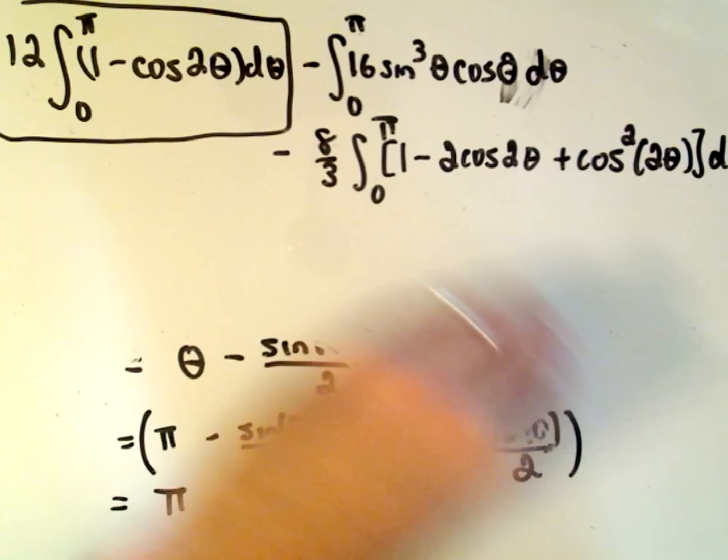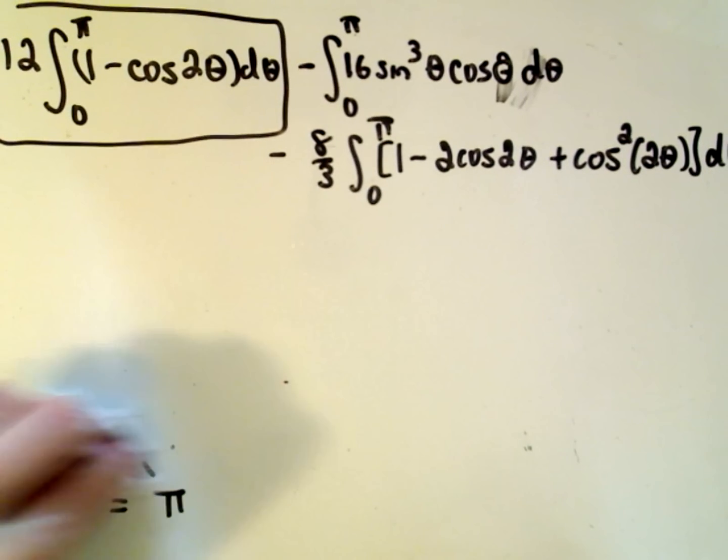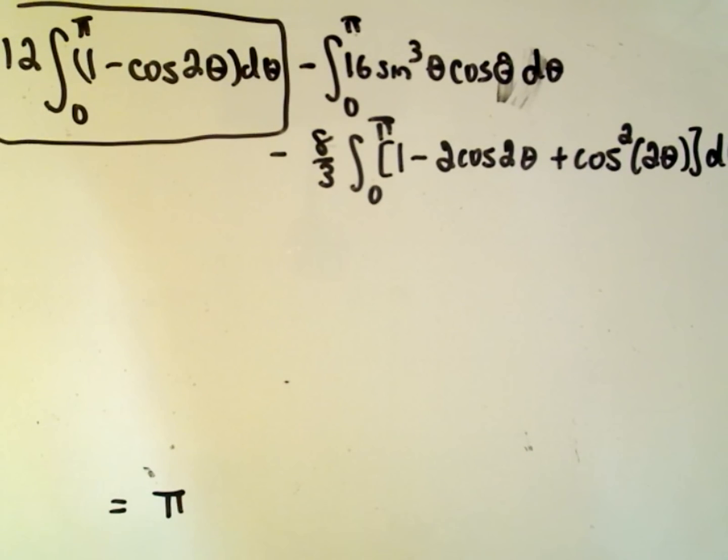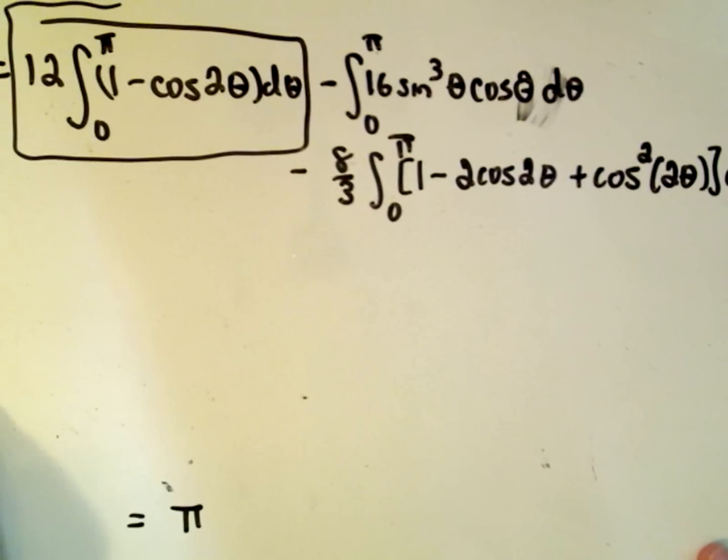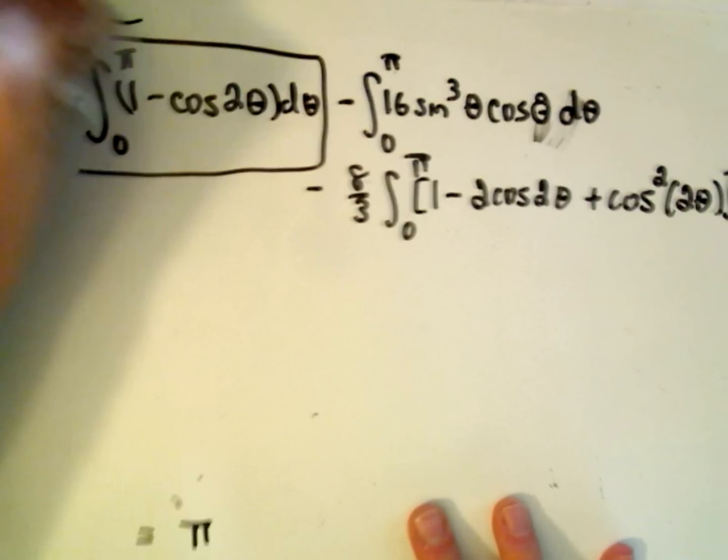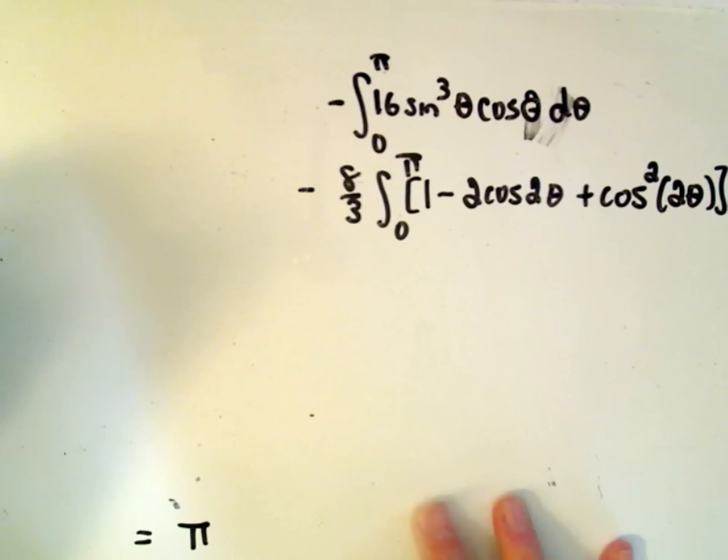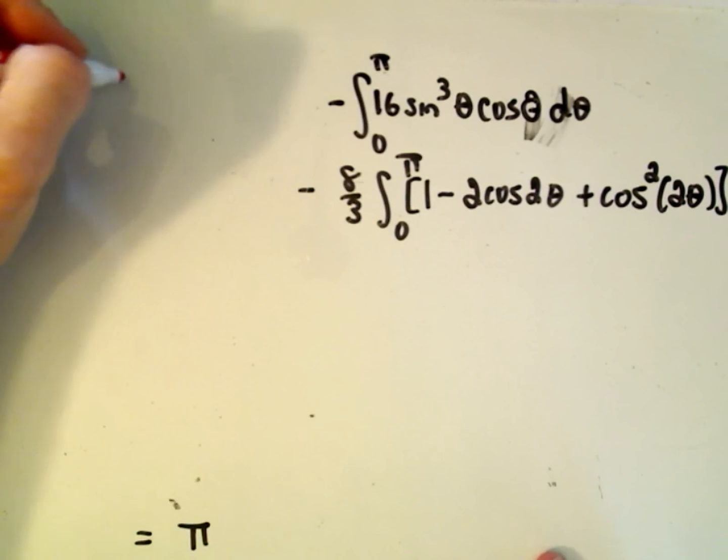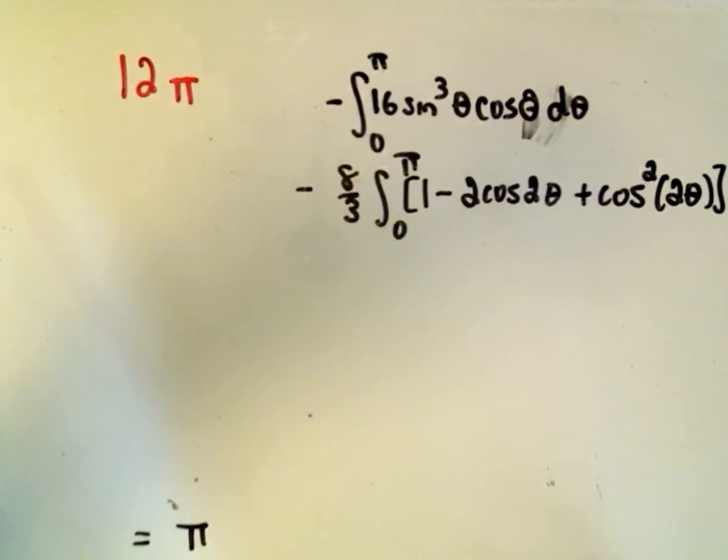Well, the good thing is sine of 2π is going to give us 0. Sine of 0 is 0. So the only thing we're left with from the first integral is π. But again, don't forget that we're multiplying that by 12. So really, this whole first integral is going to work out to be the number 12 times π. Okay, so we'll get 12π for the first part.